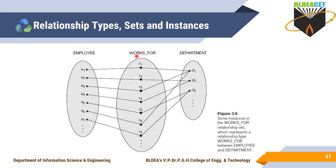Here you are relating the Employee and Department entity types with a relationship type called 'Works For.' It is very simple — an employee must work for a department. Now, entity E1 works for department D1, and you relate these two with a relationship instance R1. The 'Works For' relationship type relates the employee and department entity types.